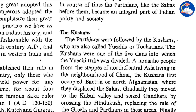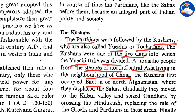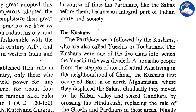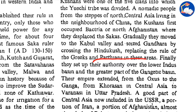After the Parthians came the Kushans, who were also called Yuezhi or Tocharians. The Kushans were one of the five clans into which the Yuezhi tribe was divided — a nomadic people from the steppes of north-central Asia, living in the neighborhood of China. The Kushans first occupied Bactria or northern Afghanistan, displacing the Sakas. Gradually they moved to the Kabul valley and seized Gandhara by crossing the Hindu Kush, replacing the rule of the Greeks and Parthians. Finally, they set up their authority over the lower Indus basin and greater part of the Gangetic basin. Their empire extended from the Oxus to the Ganga, from Khorasan in Central Asia to Varanasi in Uttar Pradesh.